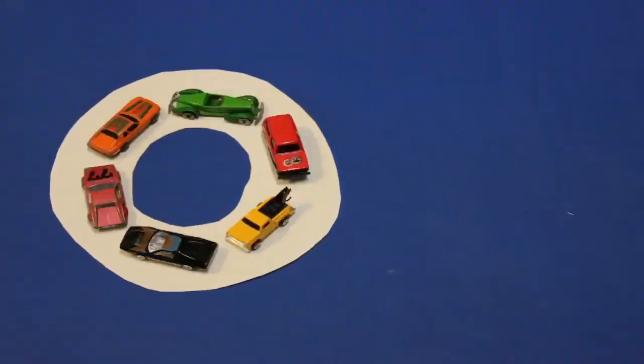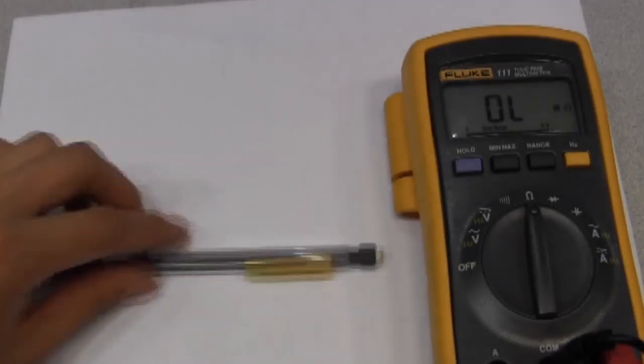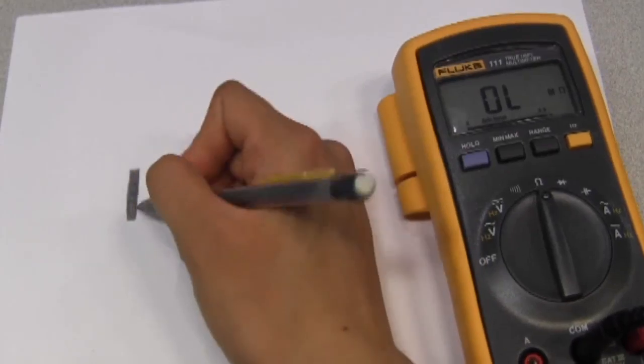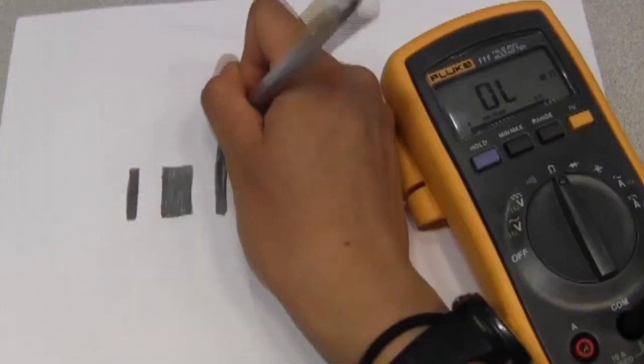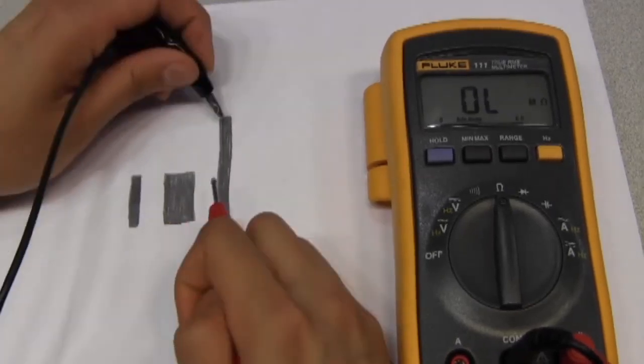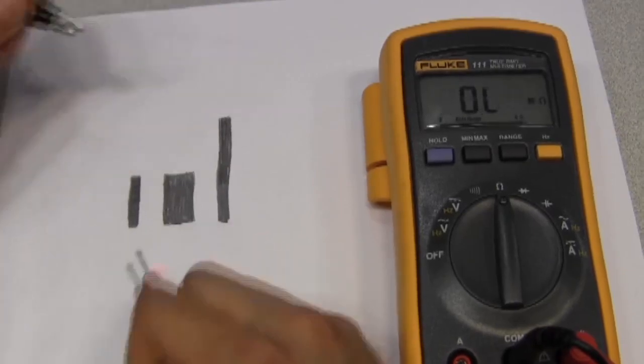When something has less resistance, it's like making the track wider and letting more cars go around. Taking my pencil and drawing three rectangles of different sizes. Now to measure their resistances. The first one is about 5.6 kilo ohms. The longer one is about 25. I'll let you try out the middle for yourself.